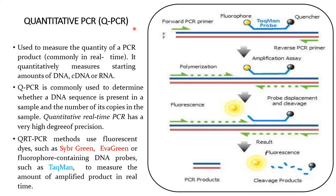Quantitative PCR or qPCR is used to measure the quantity of PCR product. Commonly used in real-time PCR, it quantitatively measures the starting amount of DNA, cDNA, or RNA. qPCR is used to determine whether a DNA sequence is present in a sample and the number of copies in the sample. Quantitative real-time PCR has a very high degree of precision. qRT-PCR methods use fluorescent dyes such as SYBR Green, EvaGreen, and fluorophore-containing DNA probes such as TaqMan to measure the amount of amplified product in real-time.